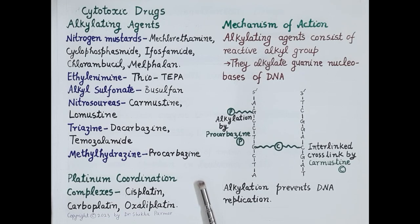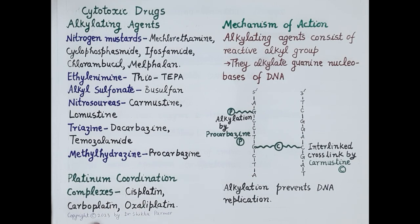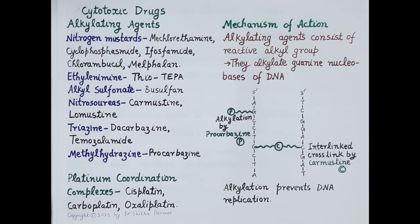Another type of cytotoxic drugs are the platinum coordination complexes — cisplatin, carboplatin, oxaliplatin. The mechanism of action of these drugs is similar to that of alkylating agents. These drugs also react with the guanine nucleobases and they also cause cross-linking of the DNA.